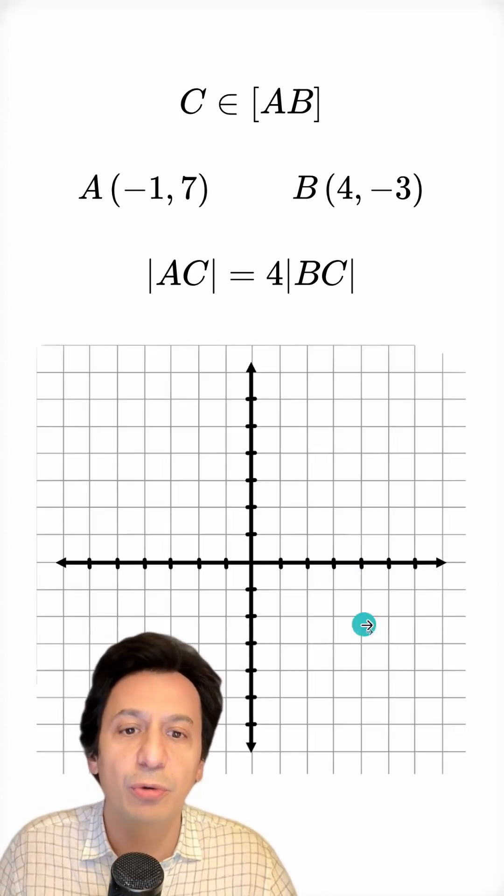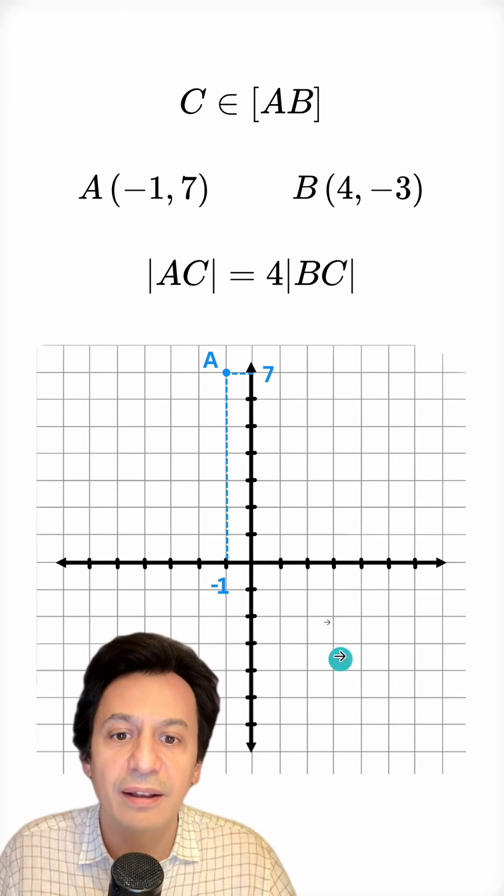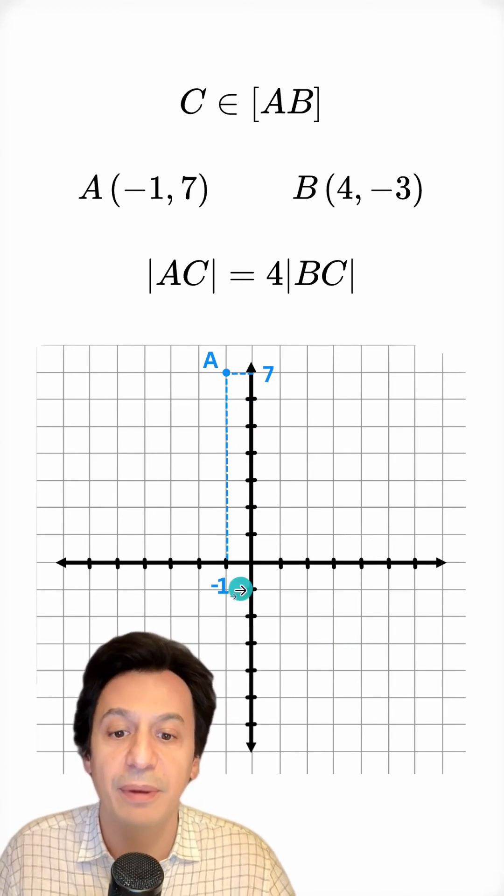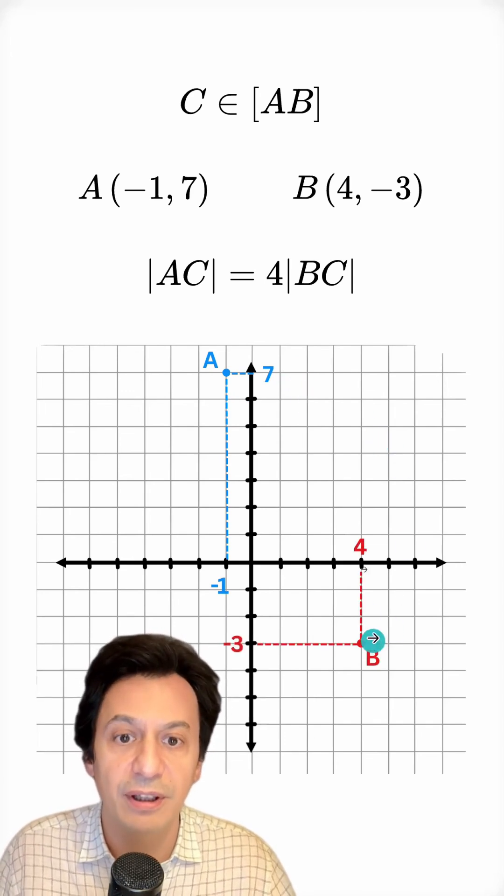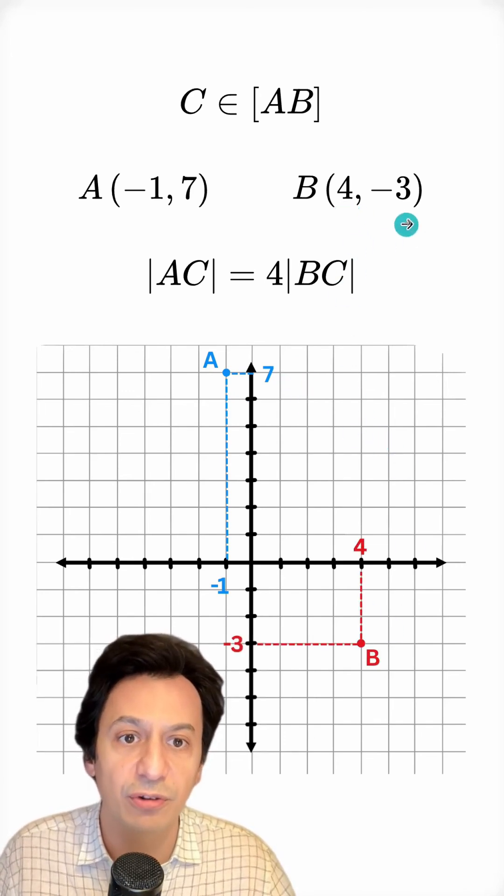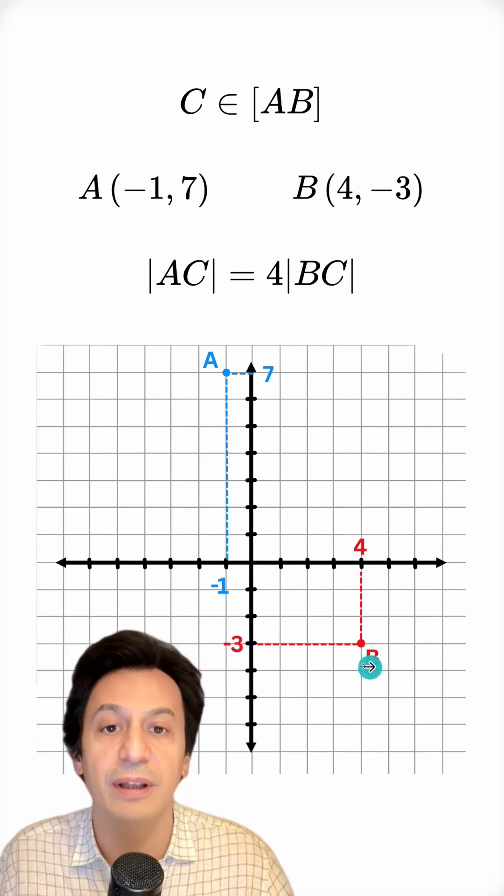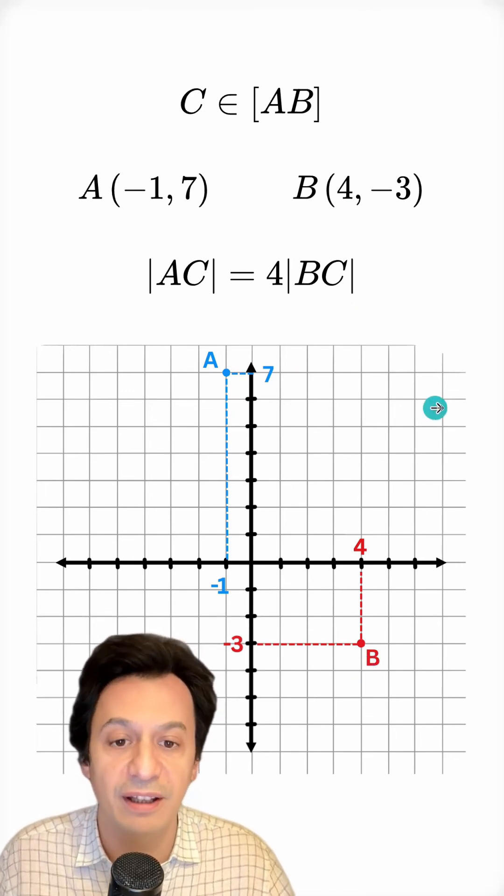Let's get started. First we drew our coordinate plane and then we identified point A. Its abscissa is minus 1 and its ordinate is 7. Next, let's identify point B. Its abscissa is 4 and its ordinate is minus 3. Here is our point B. Now we can draw the line segment AB.